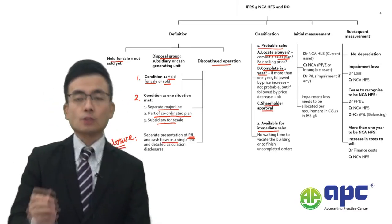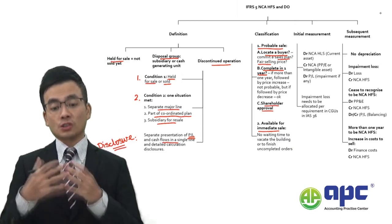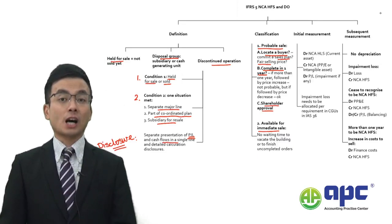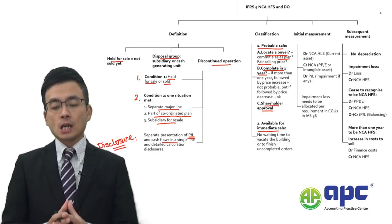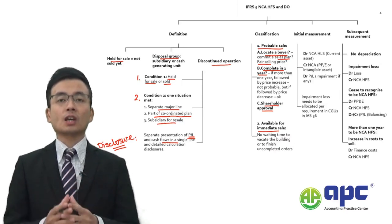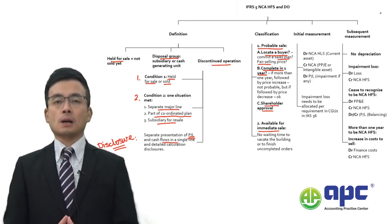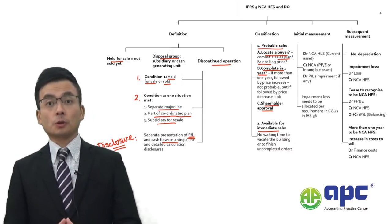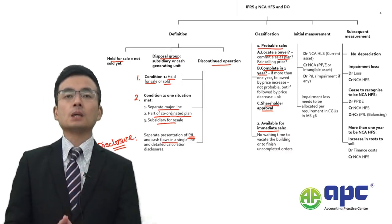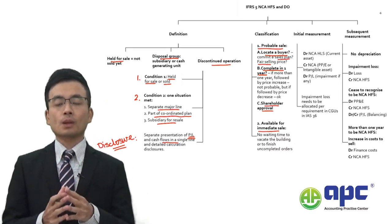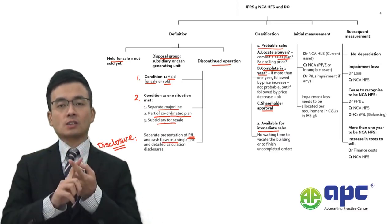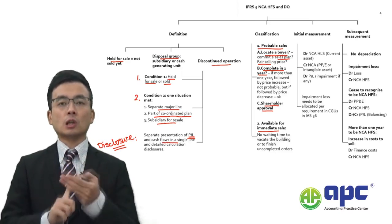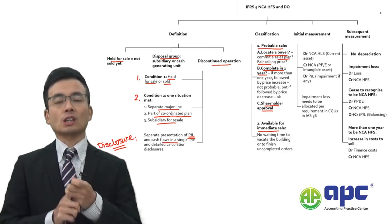Third, whether or not you have shareholder approval to sell that piece of building or major asset is very important. If there is no approval, you need to look at the resolution from the general meeting as well as the board meeting from the auditor's point of view. You need to check these to confirm the probability of the sale. Probability depends on: actively locating a buyer, completing the sale within one year, and having approval — three criteria requiring supporting evidence.